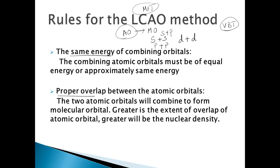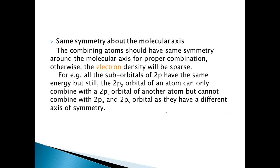The second rule is overlapping. The overlap between the two orbitals of different atoms should be maximum. The greater the extent of the overlap, the stronger the bond formed.